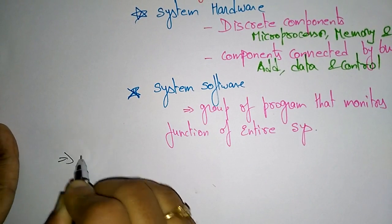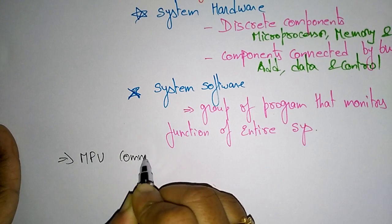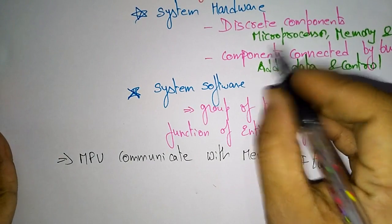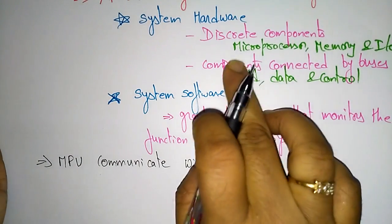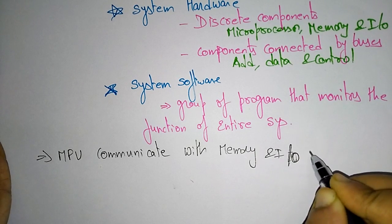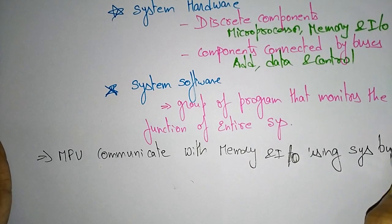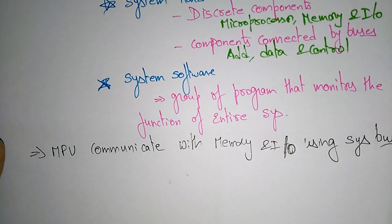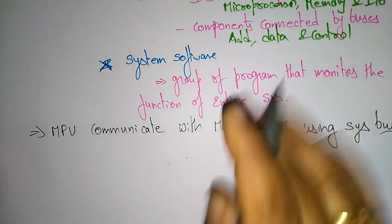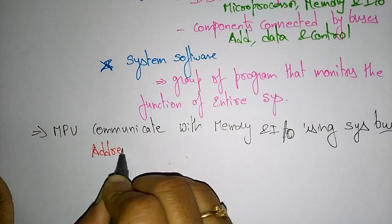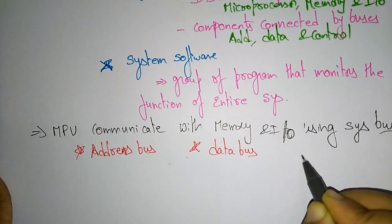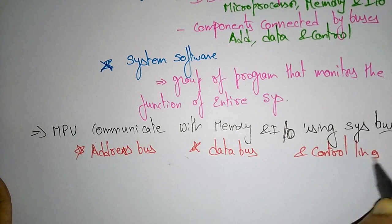Whatever microprocessor unit you have taken, the microprocessor unit communicates with memory and I/O using the system bus. The system bus consists of the address bus, data bus, and control lines.